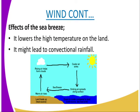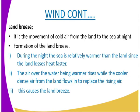The land breeze is the movement of cold air from the land to the sea at night — it is the opposite of the sea breeze. During the night, the sea is relatively warmer than the land since the land loses heat faster. The air over the water, being warmer, rises, while the cooler dense air from the land flows in to replace it. This causes the land breeze, with high pressure on the land and low pressure on the sea.